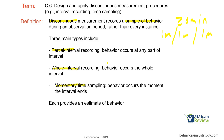Here's how to remember these: partial interval recording is when the behavior occurs at any part of the interval; whole interval recording is when the behavior occurs the whole interval; and momentary time sampling is when the behavior occurs the moment the interval ends.